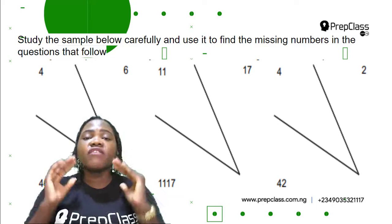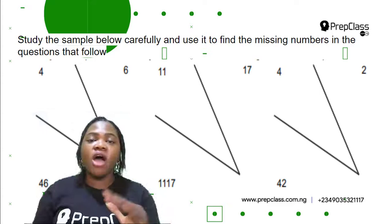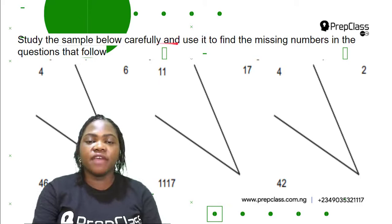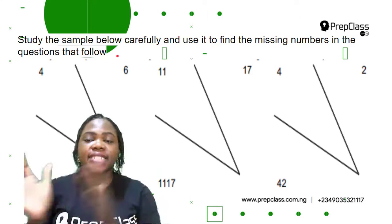We have the samples first. In quantitative reasoning, you are given a set of samples to study first before you answer the questions. So don't be in a hurry to answer the questions. The instruction says: study the sample below carefully and use it to find the missing numbers in the questions that follow.